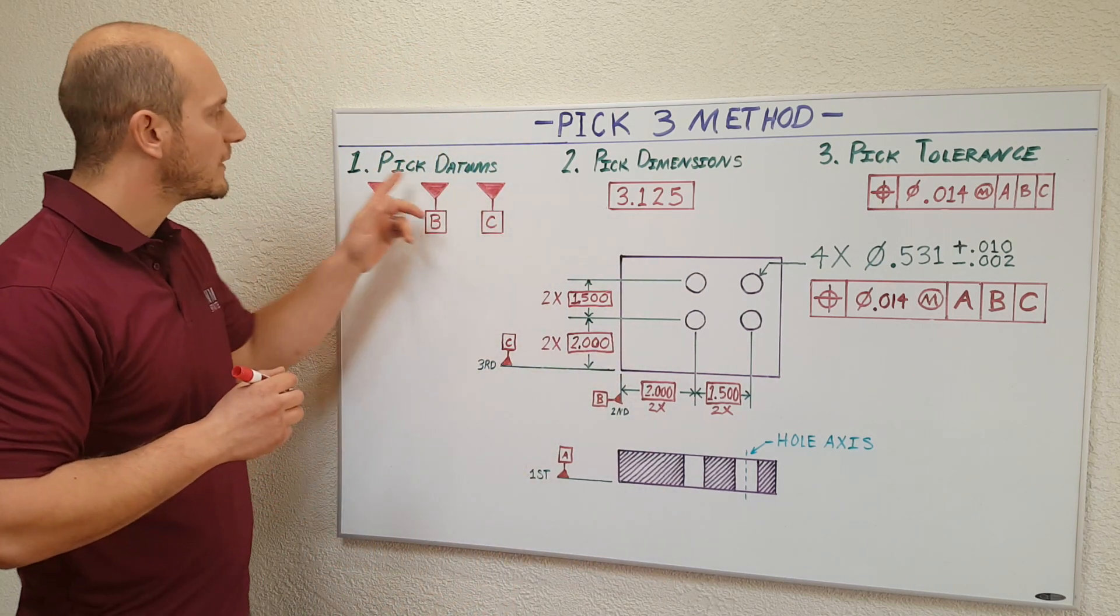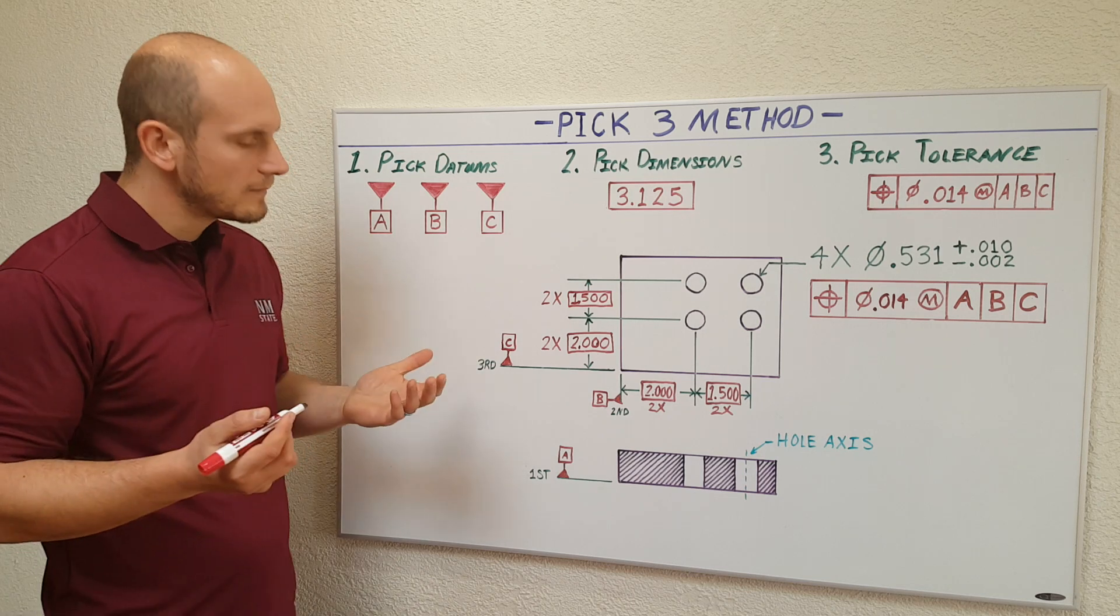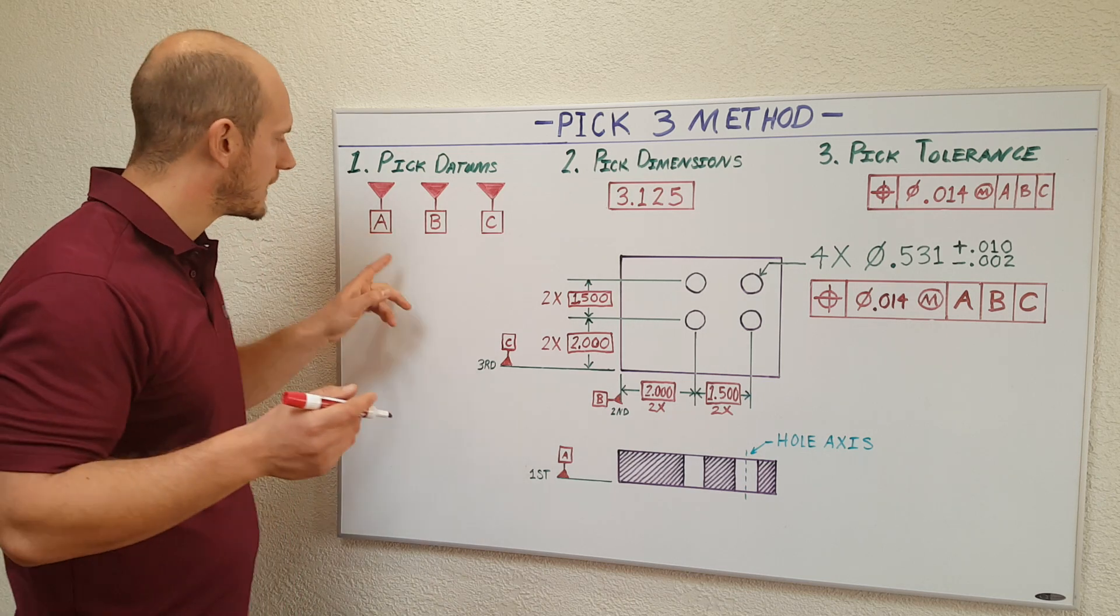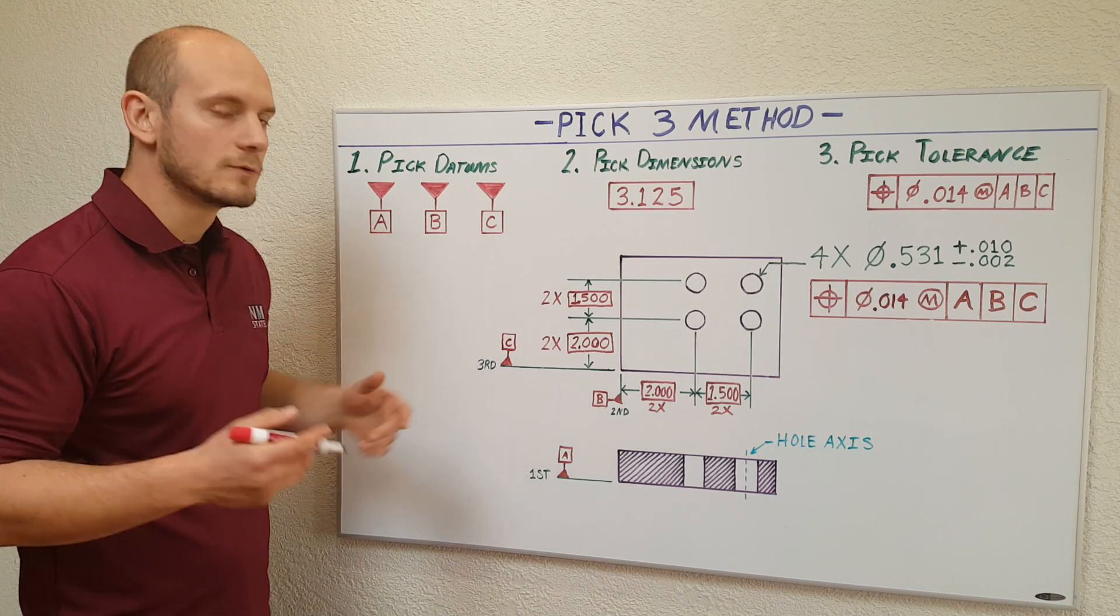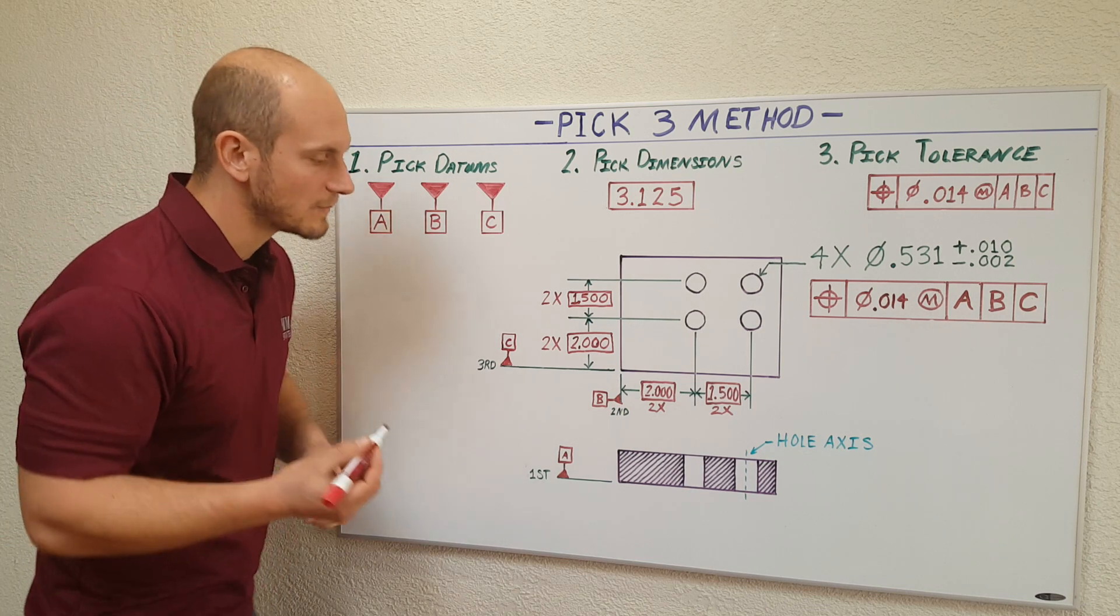The first thing you're going to do, you're going to pick your datums. Typically there's three datums, and typically those datums are A, B, and C. Your datums are your starting point. So let's pick our datums.